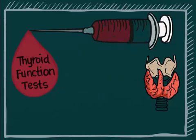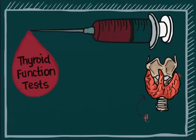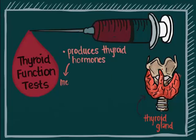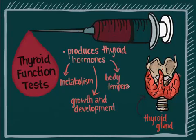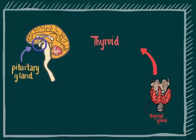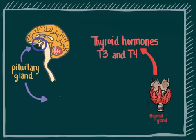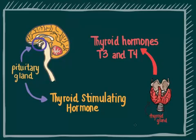Thyroid function tests. The thyroid produces thyroid hormones that influence metabolism, growth and development, and body temperature. The thyroid gland produces two hormones: triiodothyronine or T3 and thyroxine or T4. These hormones are produced when the pituitary gland releases thyroid stimulating hormone or TSH, which triggers the release of the thyroid hormones.